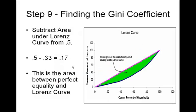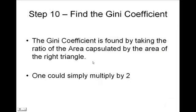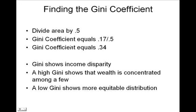Next, in order to find the green area, I subtract the area under the Lorentz curve from 0.5, which would be the area of this right triangle. I have now taken 0.5 minus 0.33 for 0.17. This is the area between perfect equality and the Lorentz curve, or the area covered in green. The Gini coefficient is found by taking the ratio of that area to the area of the right triangle — one could simply multiply by 2 — but dividing by 0.5, I have the Gini coefficient equals 0.34.